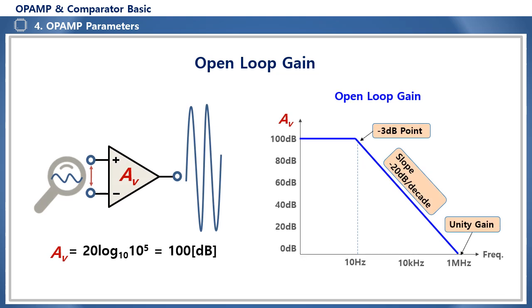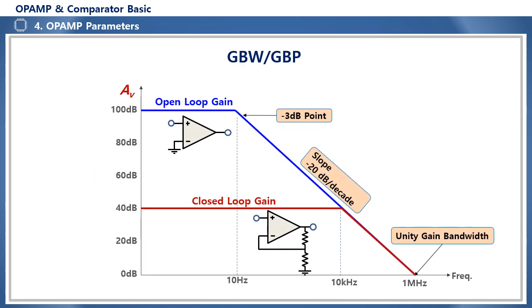The open loop gain of the op-amp is very high — a typical op-amp is about 100,000 times, or about 100 decibels. Since the covered frequency band cannot be infinitely high, it maintains a certain level of amplification and drops at minus 20 dB per decade. As the gain increases, the frequency band decreases inversely, due to the effect of capacitance within the internal circuit of the op-amp.